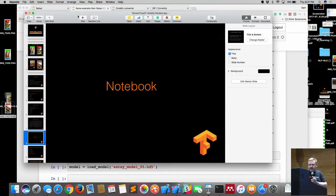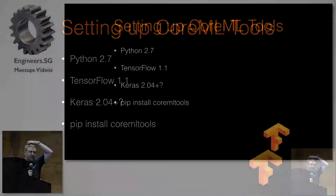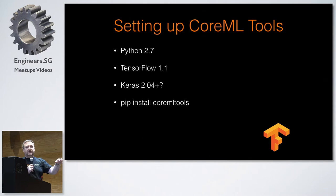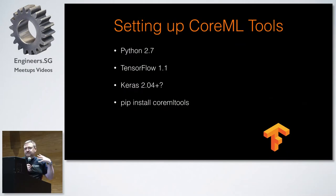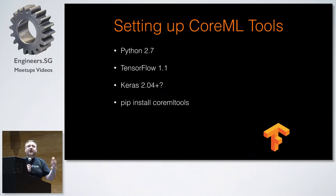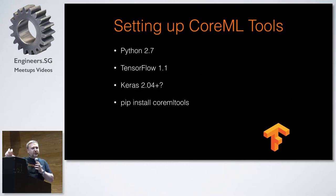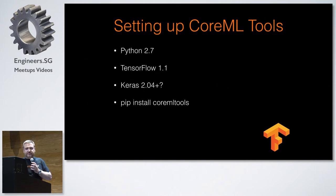The cool thing with CoreML tools is it has the ability to read a Keras model and convert it from a Keras model to a CoreML model. CoreML is Apple's new machine learning system for iOS 11. It runs on Metal, so it can be GPU-optimized — all done behind the scenes, you don't need to worry about it. CoreML is the SDK running on the phone; CoreML tools is a Python package used to convert from Caffe or Keras models to the Apple format that goes on the phone.